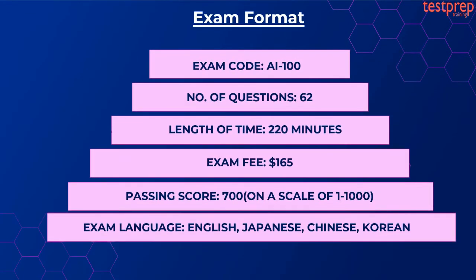The Designing and Implementing an Azure AI Solution AI 100 exam consists of 62 questions. To complete the exam, candidates will get 220 minutes. The types of questions include scenario-based single-answer questions, multiple-choice questions, arrange-in-the-correct sequence type questions, drag-and-drop questions, mark-review, etc. To pass the exam, a candidate has to score a minimum of 700 or more.